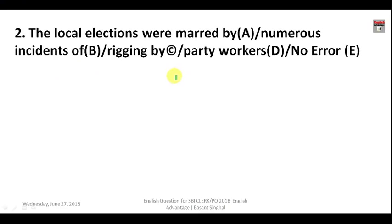Question number two: 'The local elections were marred by numerous incidents of rigging by party workers.' Rigging means an incident of dishonesty. 'Were' is correctly followed by the third form of the verb. 'Numerous', 'by party workers', and all other words are appropriate in context. There is no error in this sentence, so the answer is E — no error.